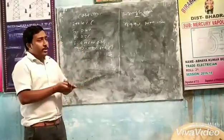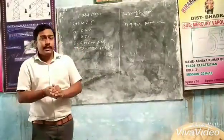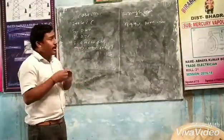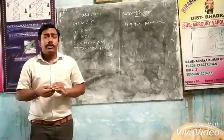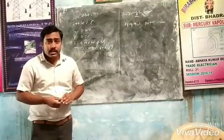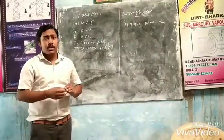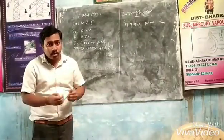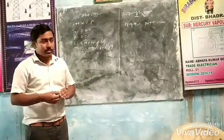Cast iron cannot be drawn into wire or coils because of the non-existence of ductility and malleability properties.